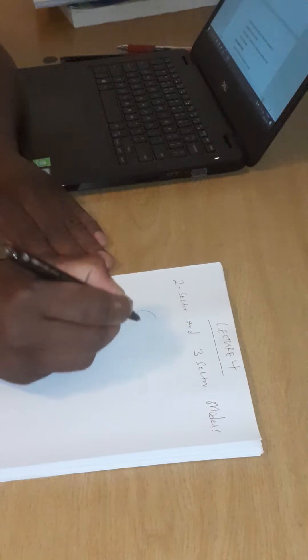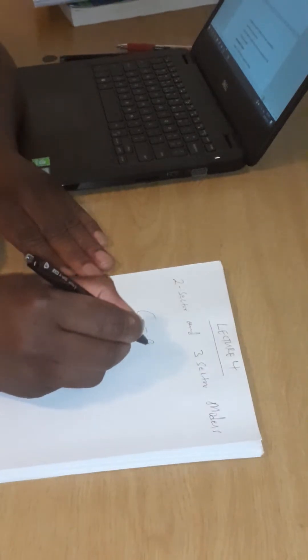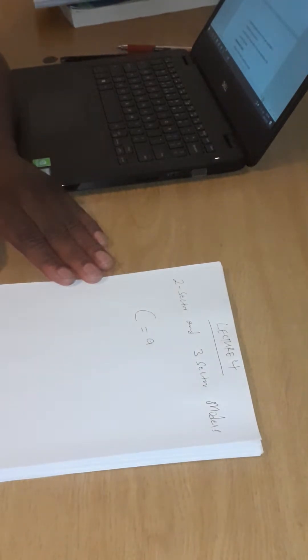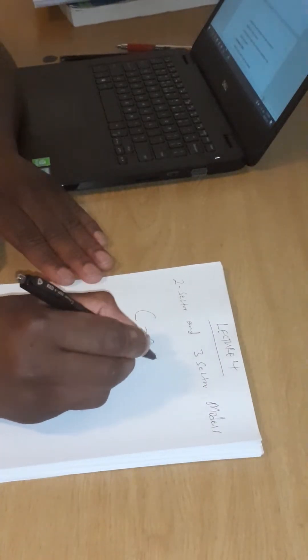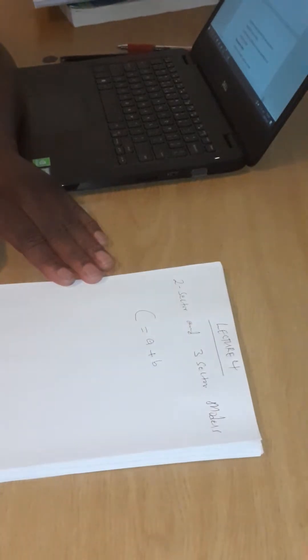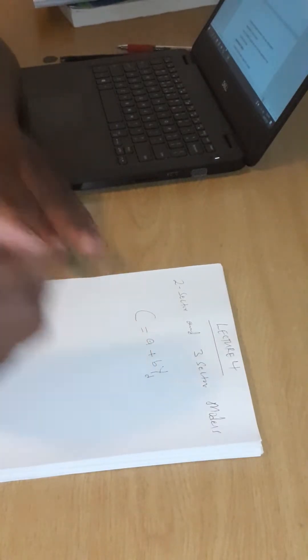I will say consumption is equal to autonomous consumption, I write A this time, plus B is my MPC, which is the slope of consumption line, and then YD is my disposable income. This is my one-sector model.